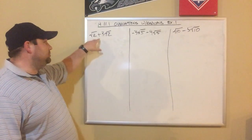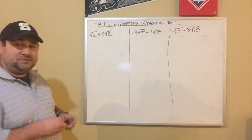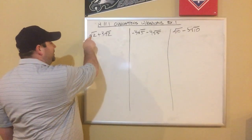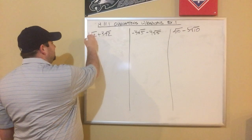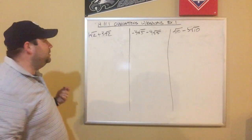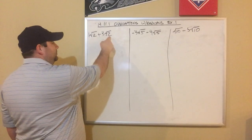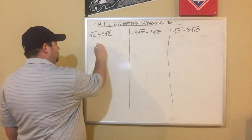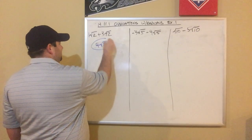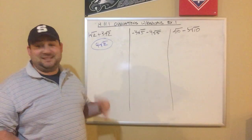So if I have a root 2 plus 3 root 2s, I've got 4 root 2s. That's all we're doing here. If there's no number in front of the root 2, you can assume a 1. So this is 1 root 2 plus 3 root 2s, which is just 4 root 2. And that's my answer — that's simplified, I'm done. I don't have to do anything else.